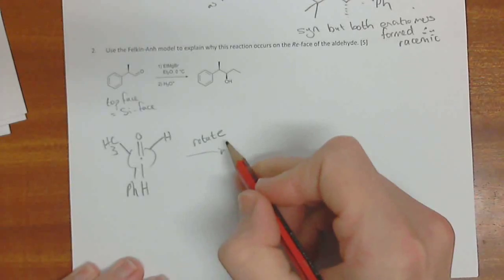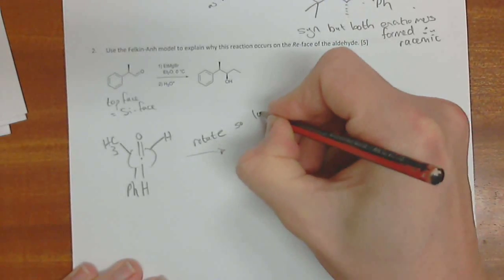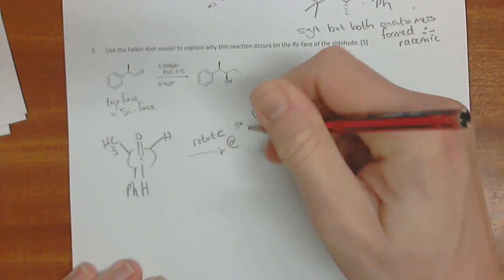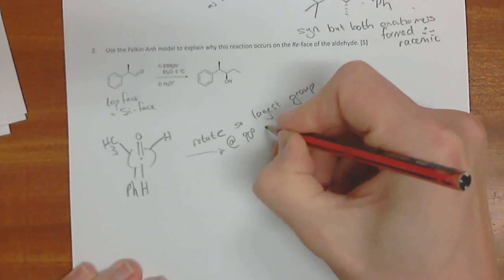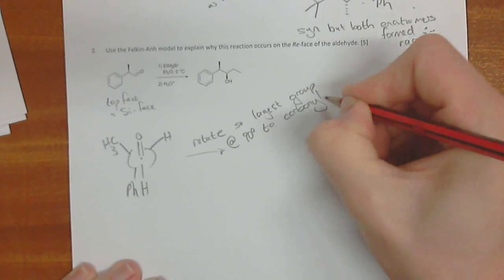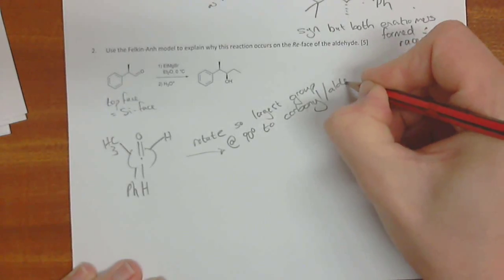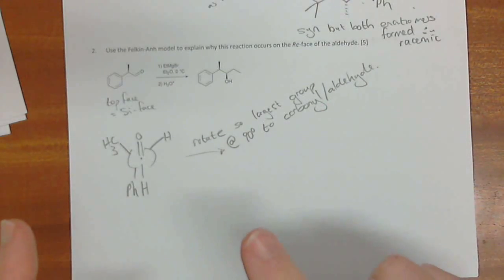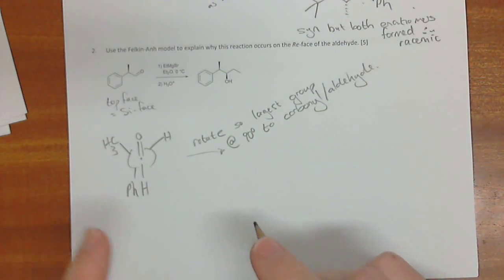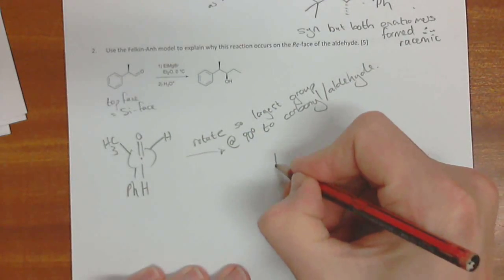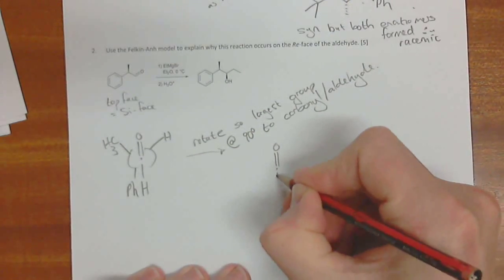And which would look something like this. The methyl group is coming out on this side. And the H is on this side. And so now we rotate. And we need to explain this here. Rotate so largest group at 90 degrees to carbonyl. Or the aldehyde, of course. Okay. So that's important because that's part of the model is that the largest group needs to be at 90 degrees.